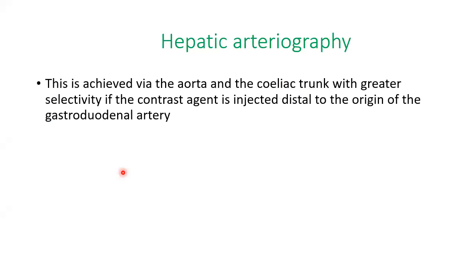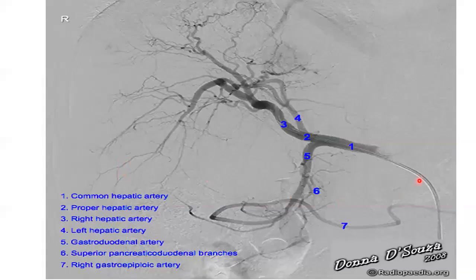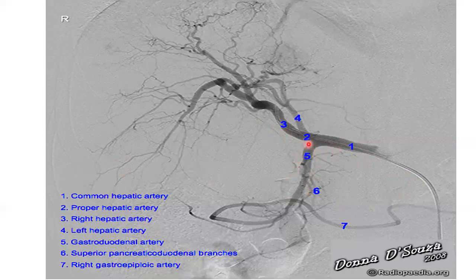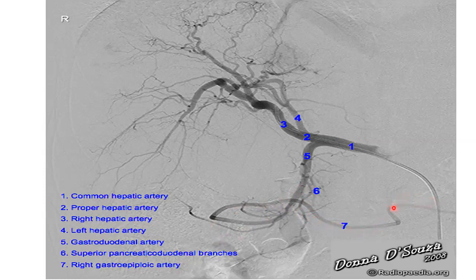Hepatic arteriography is achieved via the aorta on the celiac trunk, with greater selectivity if the contrast agent is injected distal to the origin of the gastroduodenal artery. Angiography shows the common hepatic artery giving rise to the gastroduodenal artery and proper hepatic artery. The proper hepatic artery divides into right and left hepatic arteries. The gastroduodenal artery gives rise to the superior pancreaticoduodenal artery and the right gastroepiploic artery.